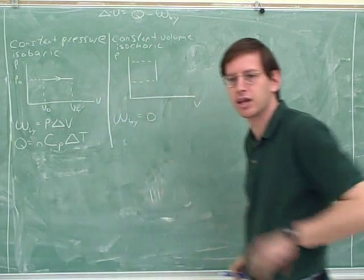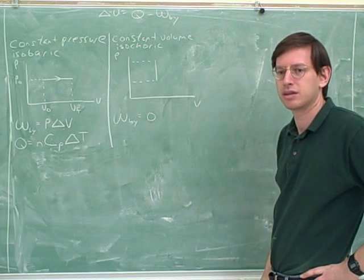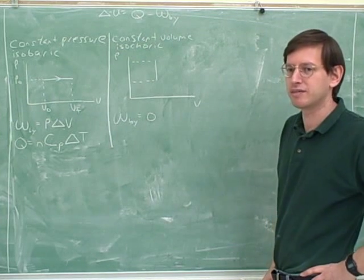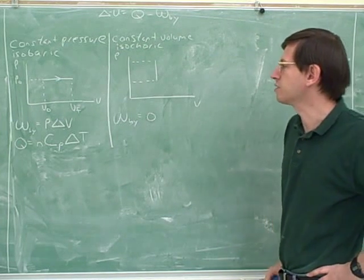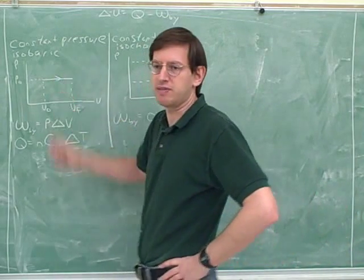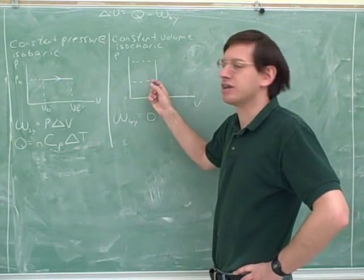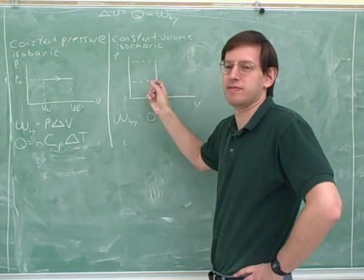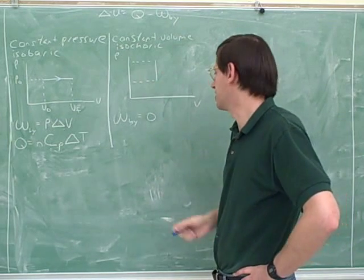Because there's no area under the curve between the line. That's a good way to think about it. The x-axis. Yeah. We know the work is always the area under the PV curve. But there is no area under a vertical line because it has a width of zero. Anything with a width of zero has no area.